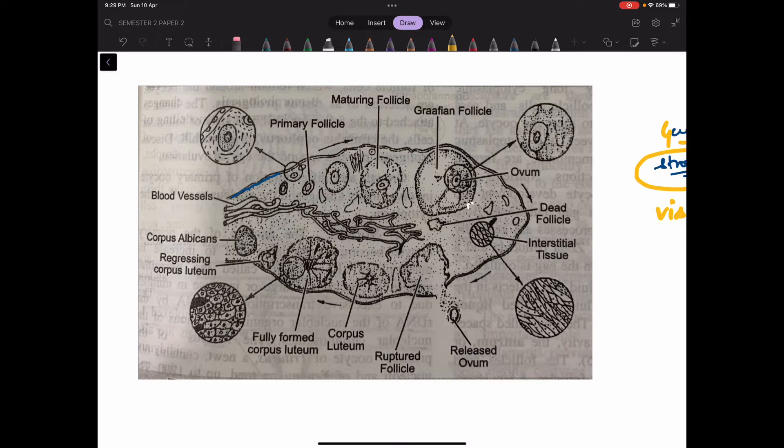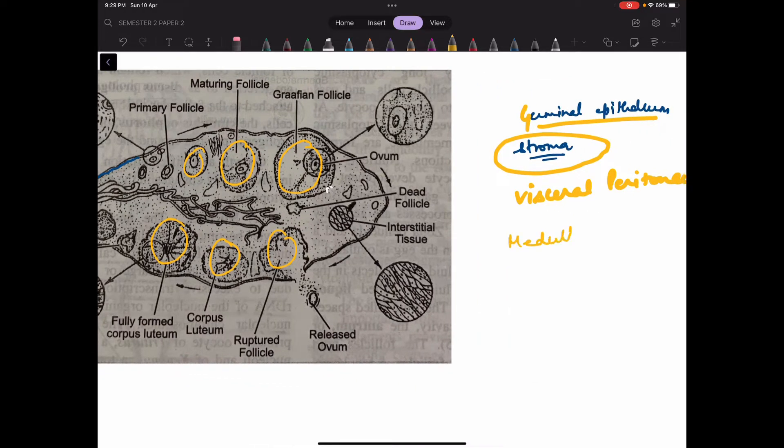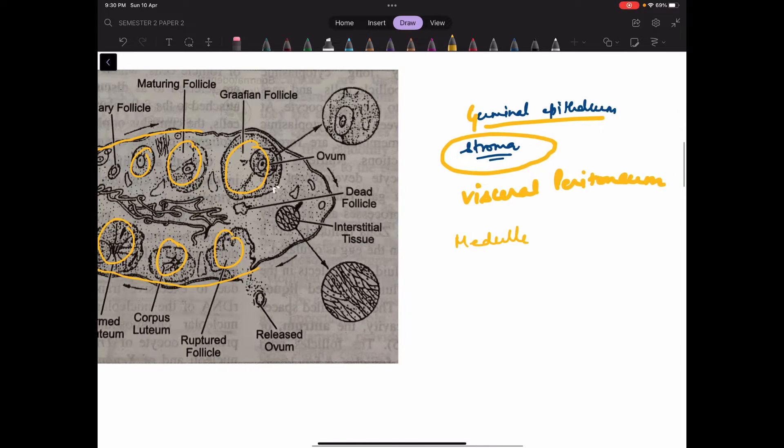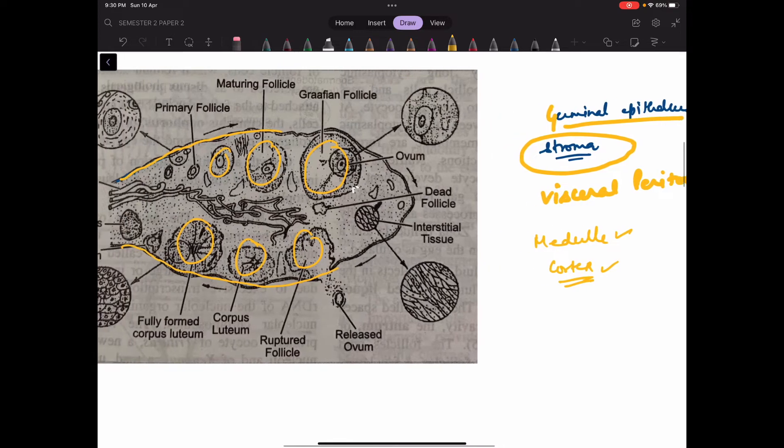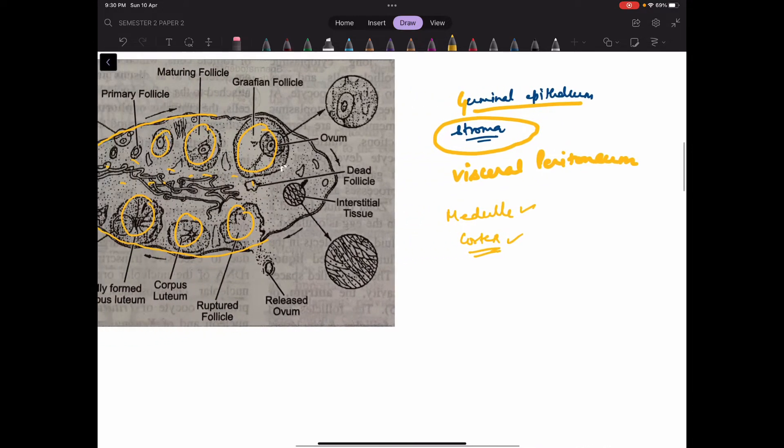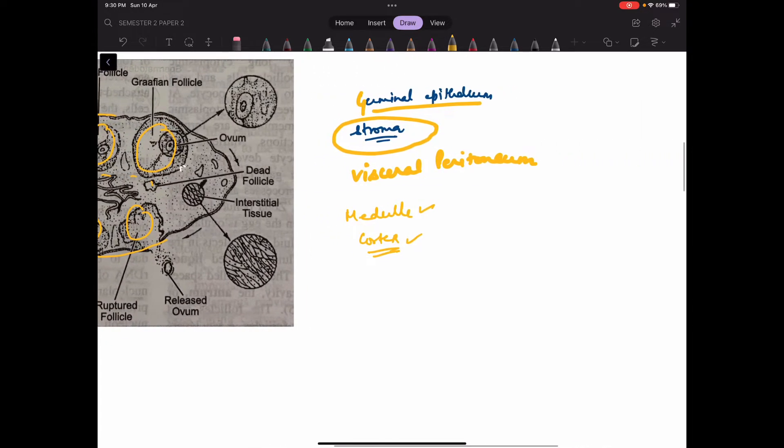On top of germinal epithelium, if you see, there is a layer of flattened cells known as visceral peritoneum. In the center of the ovary there are certain rounded structures which are the different stages of ovum. This central area is known as medulla, and this peripheral area which comprises of germinal epithelium is known as cortex. If we look at oogenesis...